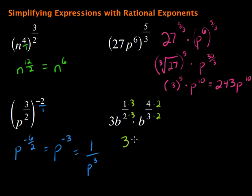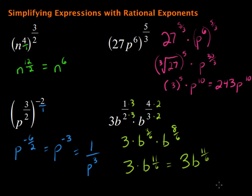So this gives us 3 times b to the 3 over 6 times b to the 8 over 6. Then we're going to add those exponents. So we have 3 times b to the 3 plus 8 is 11, and then over 6. So, if you want to get rid of that dot for the multiplication, we can do so. And we have 3b to the 11 over 6 for our exponent.